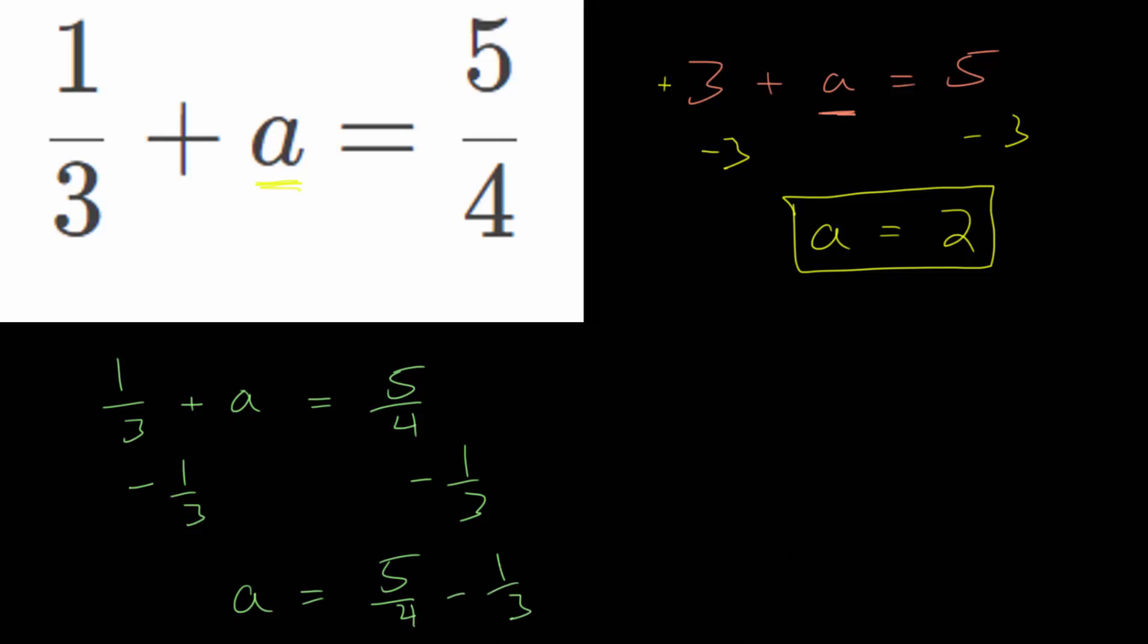And since we're subtracting fractions, remember when adding or subtracting, we need to find a common denominator. And one thing you can always do is take your denominators and multiply them together. Sometimes you can find smaller denominators than this. But in this case, 12 is actually the smallest possible denominator. It is the least common multiple of those two numbers.